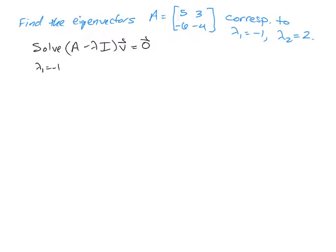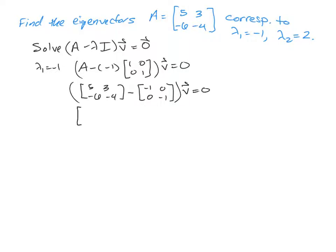So for lambda 1 equals negative 1, that's going to be A minus negative 1 times the identity matrix. And again, we're solving this times V equals zero. And you'll notice that when we distribute this negative 1 into the identity matrix and we're subtracting it, we're actually adding 1. So we're going to end up with our matrix 5, 3, negative 6, negative 4 minus a matrix with negative 1 on the main diagonals. And then when we subtract negative 1, of course, we're actually adding 1.